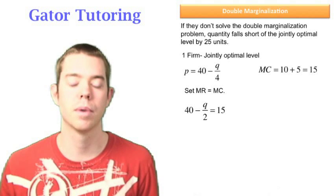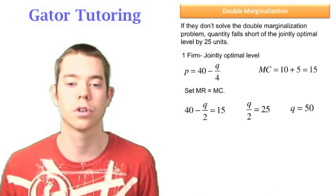In this case, we get 40 minus Q over 2 equals 15. We can simplify Q over 2 equals 25, or Q equals 50.